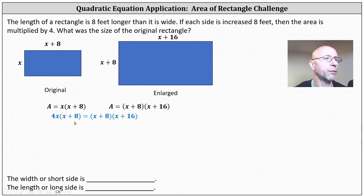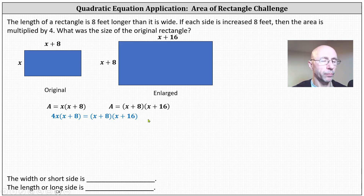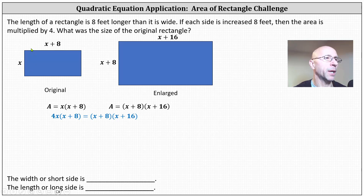By doing this, we have the equation: four x times the quantity x plus eight equals the quantity x plus eight times the quantity x plus 16. If we solve this equation for x, we can determine the width of the original rectangle, and then determine x plus eight to find the length.